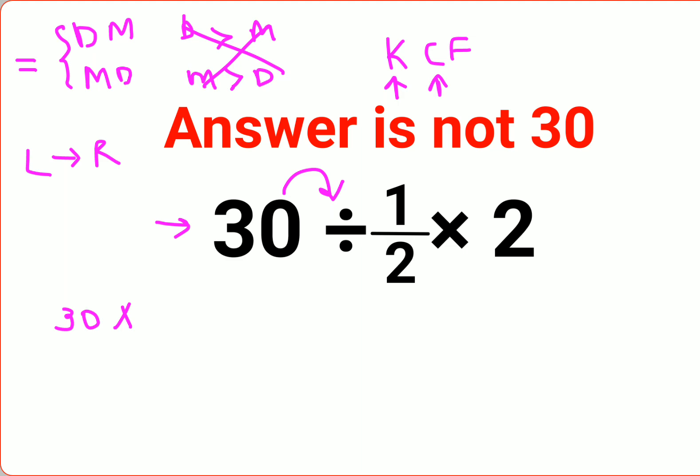F stands for flipping or taking reciprocal of half, that is 2. So that gets you 30 into 2 into 2, which gets you 60 into 2, that gets you 120. The answer for this question is 120.